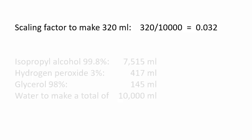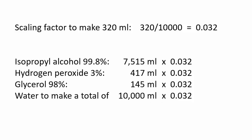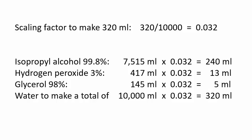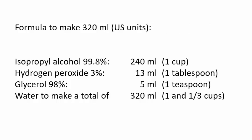Now multiply the amounts in the original formula by this factor. Here are the results rounded to the nearest whole milliliter. Now you have your scaled-down formula. I chose to make 320 milliliters because it works out to whole US measurement units.